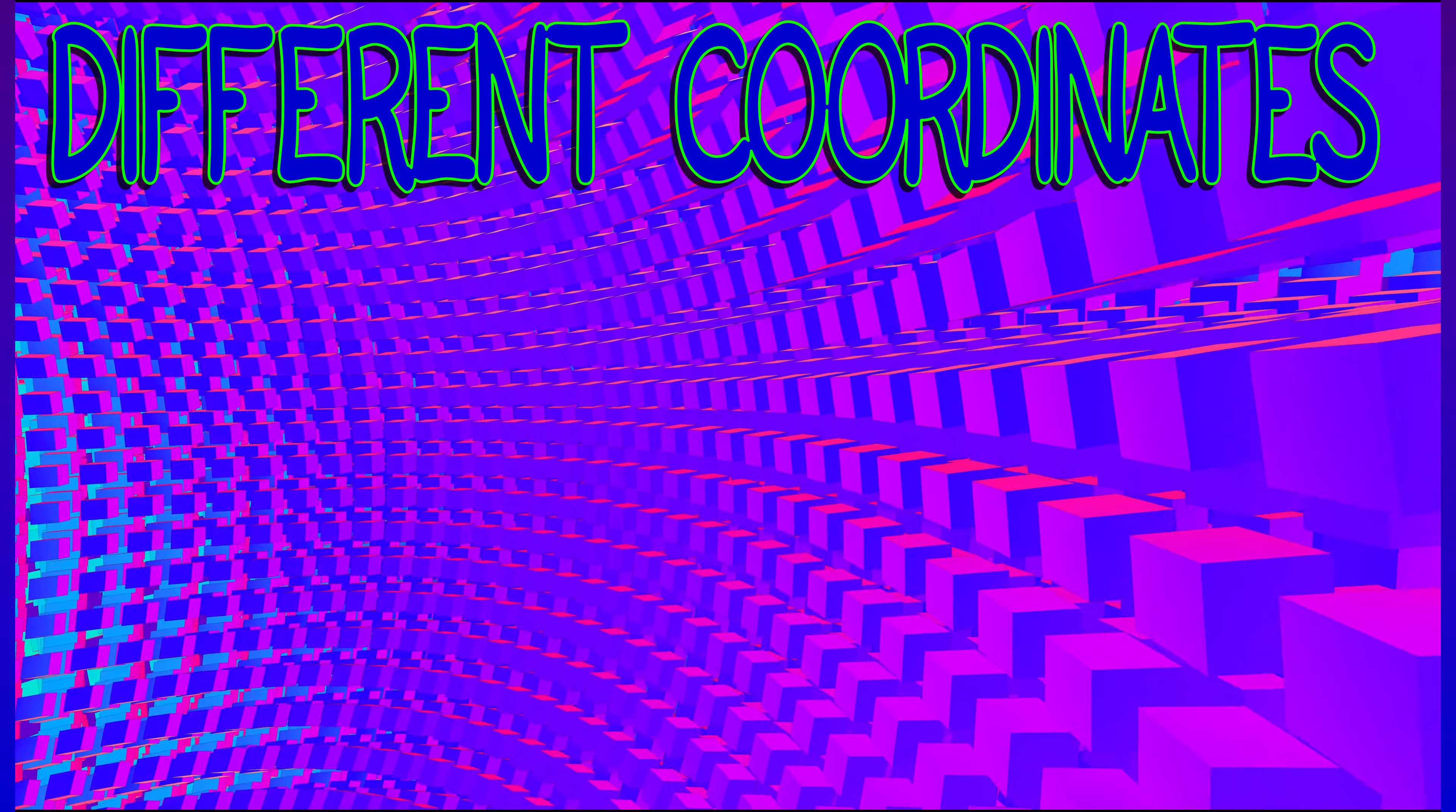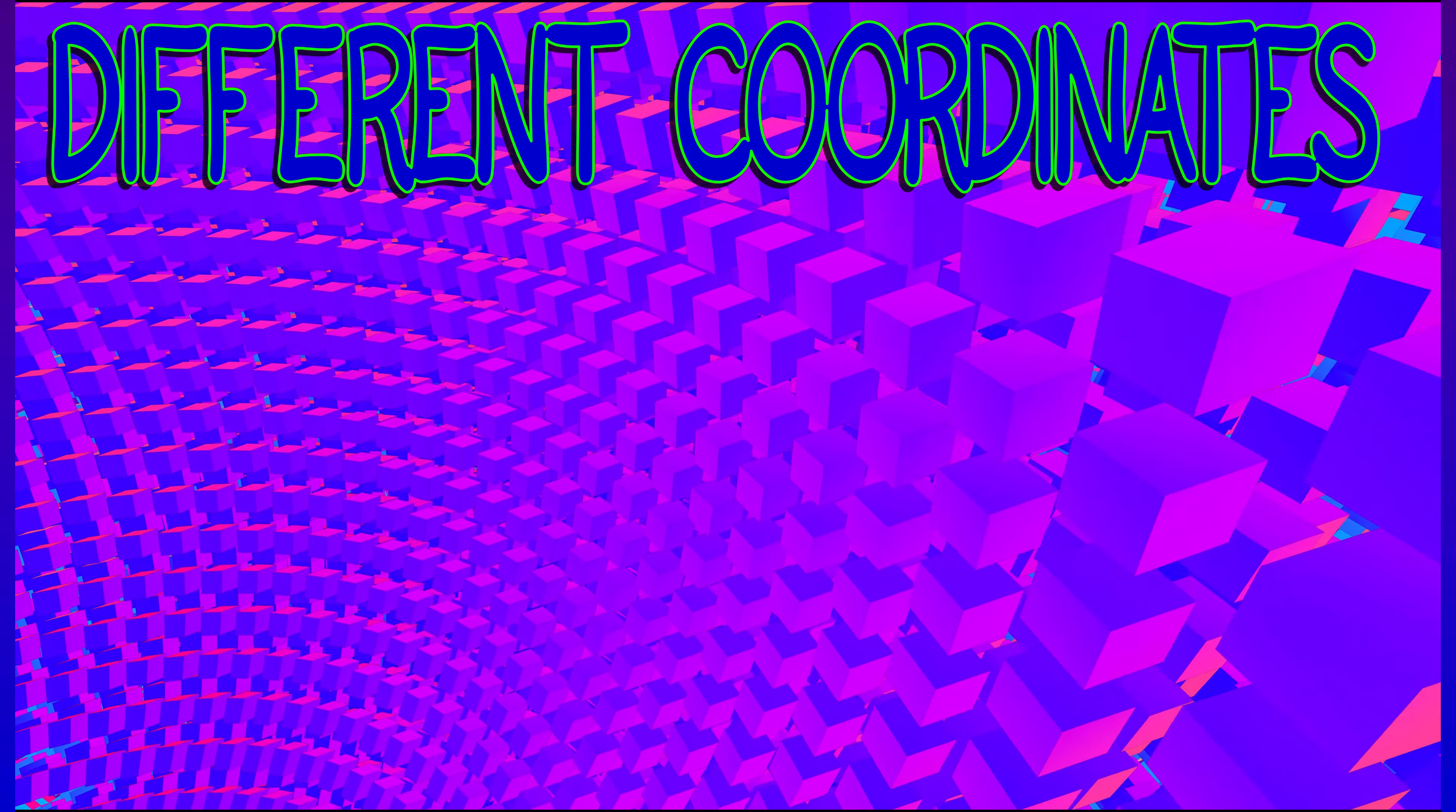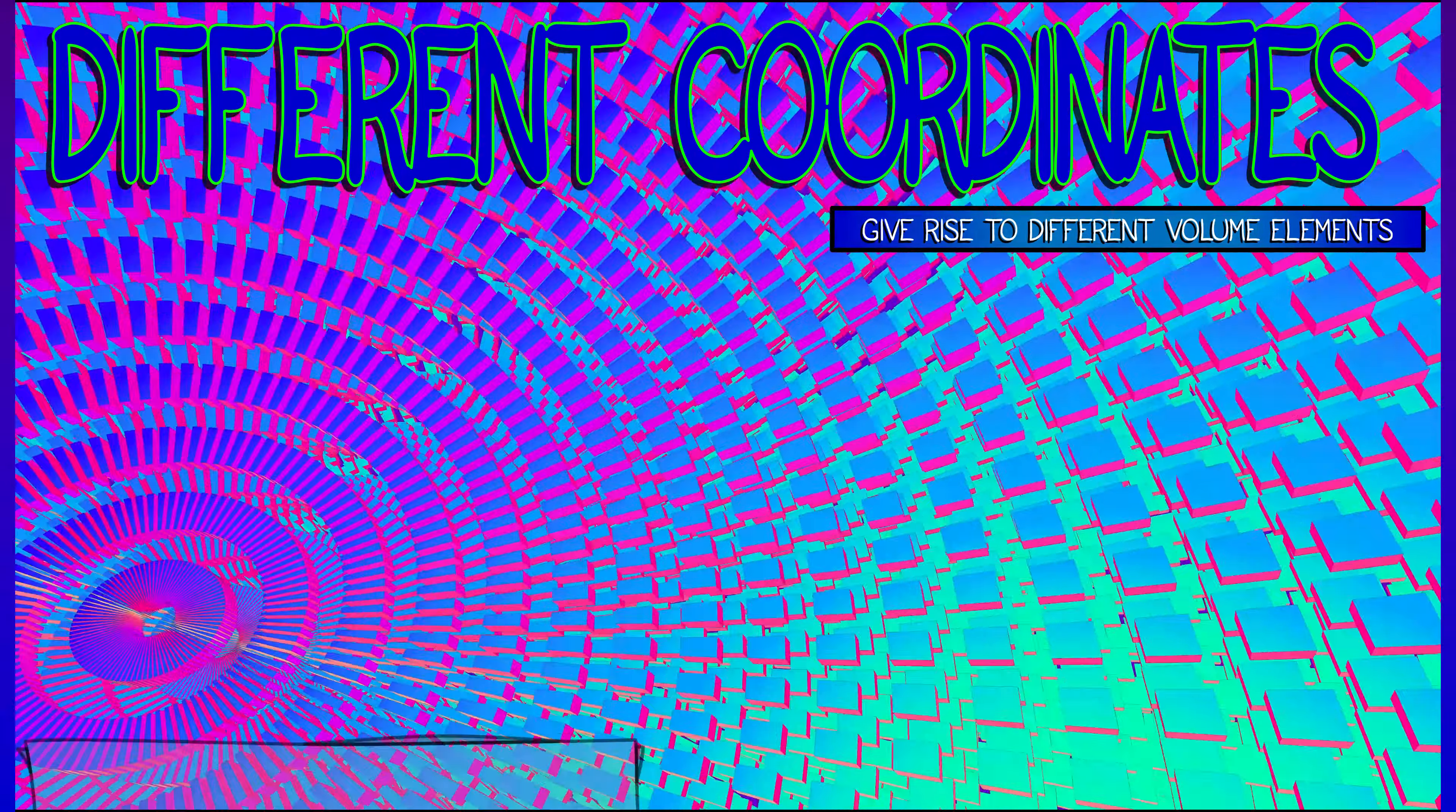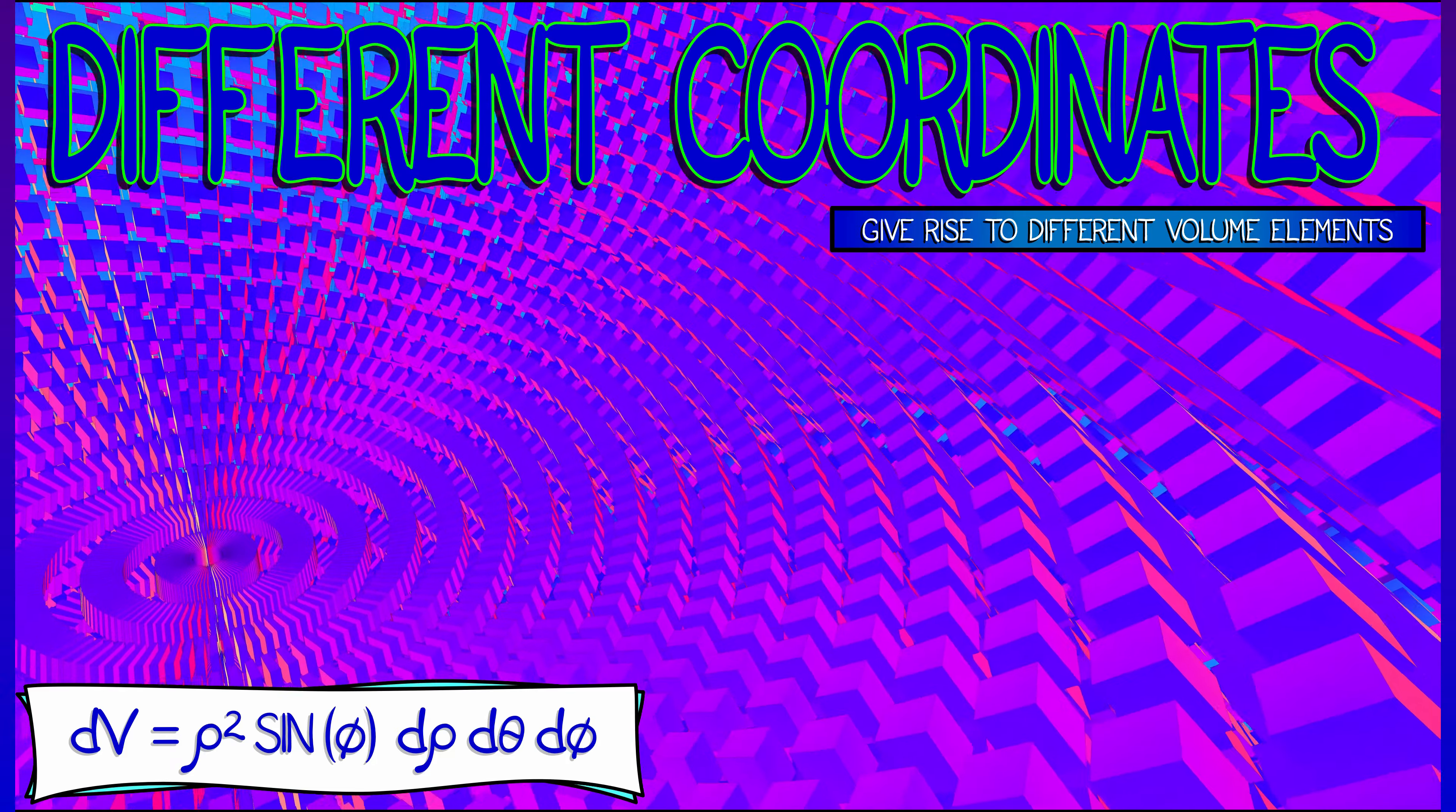One of the things that we've seen is that different coordinate systems give rise to different volume forms. We've seen this in cylindrical with r dr dθ dz. We've seen it in spherical coordinates with ρ² sin φ dρ dθ dφ.